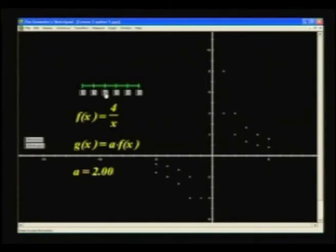I'm getting the hang of this. I suppose then that when we move the marker to a position less than one but greater than zero, then the points of the transformed function will be moving closer to the x-axis than the points of the original function. Let's confirm that.